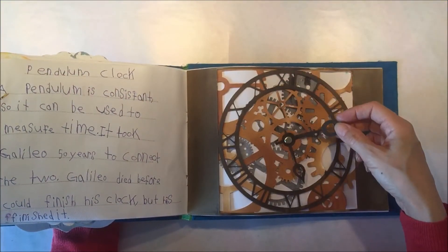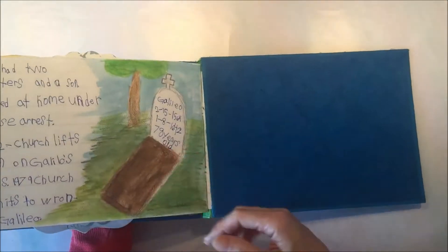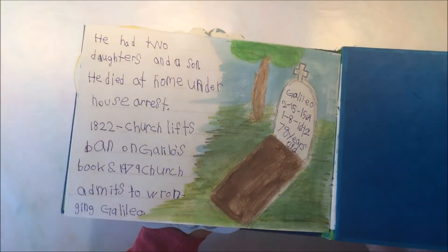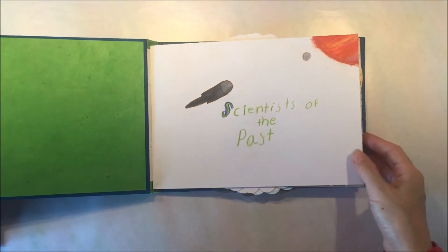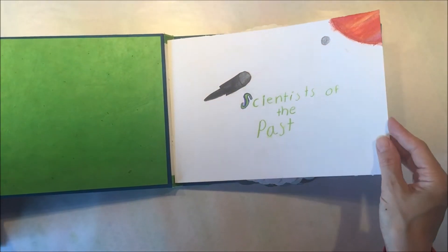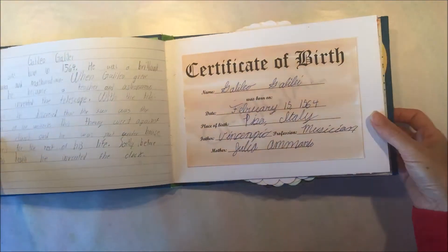So Galileo figured out finally that the pendulum could be used to invent a clock, which he did. And that was just as he was dying. And so the last page of that book was just a graveyard.